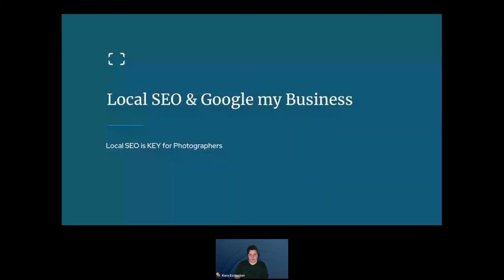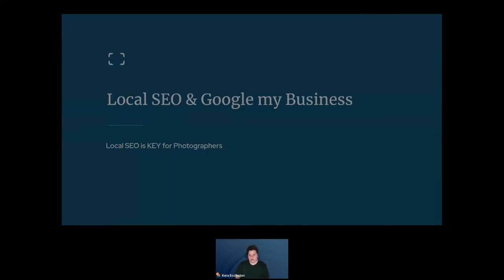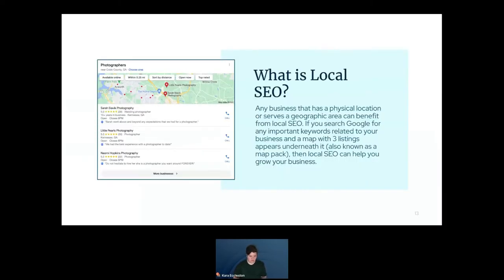Before jumping into website optimization, let's talk about local SEO. Local SEO is a branch of SEO that focuses on getting your business to appear in the local search results — those three listings that show up below the map, which we call the map pack. For businesses that serve a geographic area, most of their online traffic comes from local results. As a photographer, I'd estimate about 85 to 90 percent of your traffic is going to come from there, so this is a very key area to focus on.